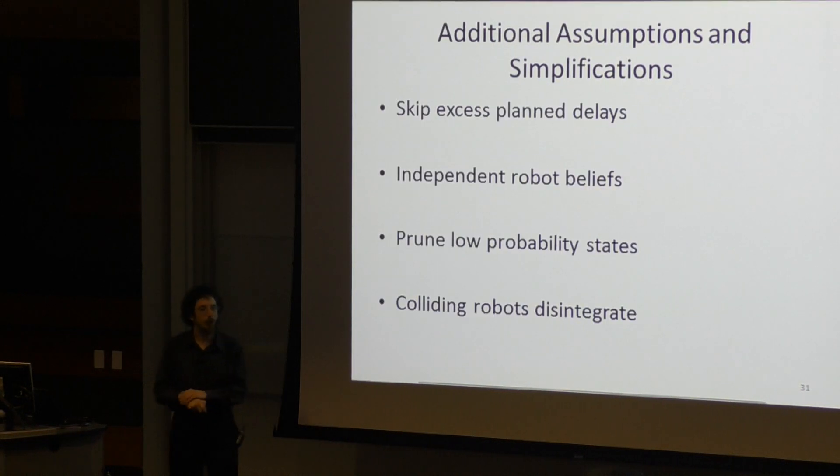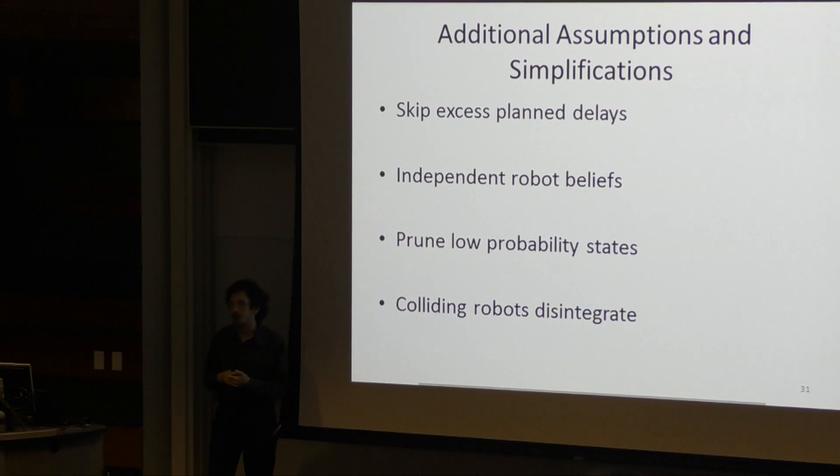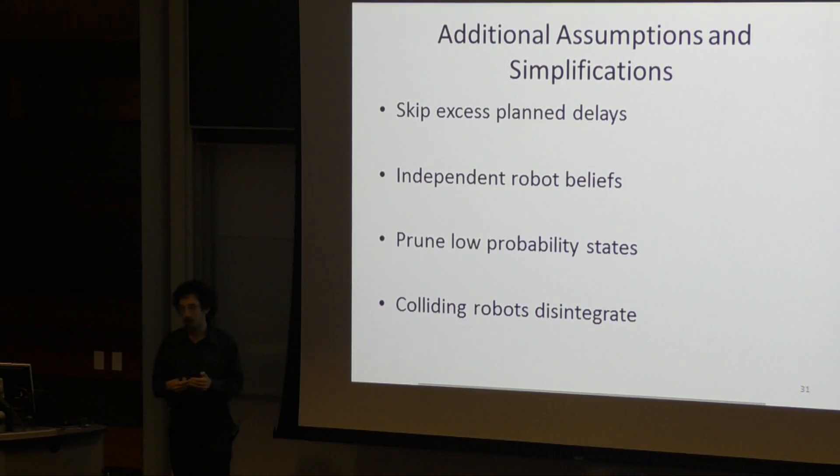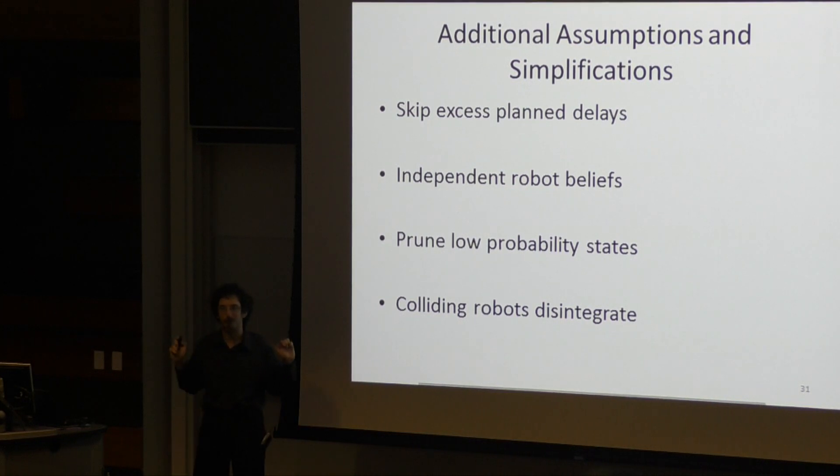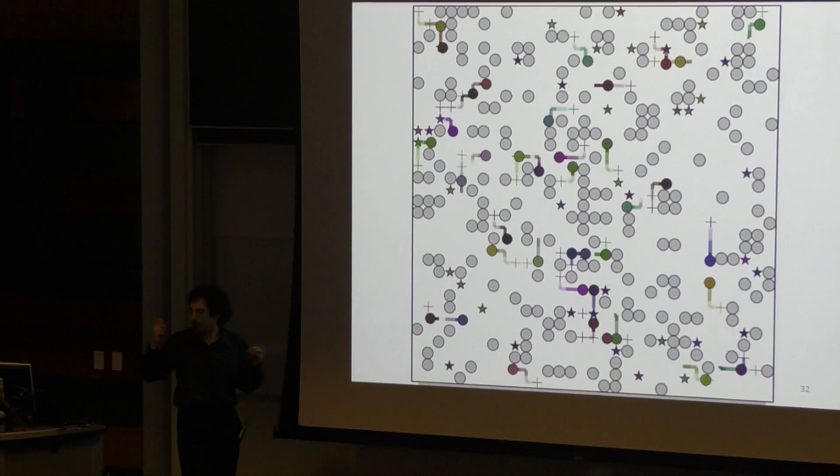The end result are belief distributions that kind of look like worms or trains trailing behind the nominal location of the robot. We then also make a bunch of other assumptions for various computational reasons that unfortunately I don't have time to get into, but at least you know that we have to make a few more to make this work.